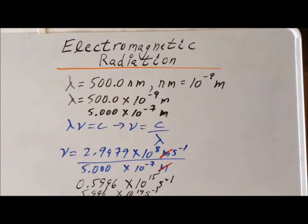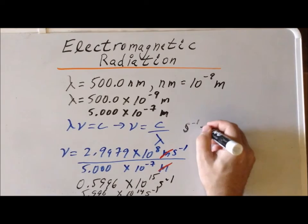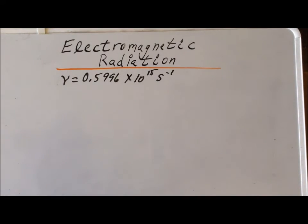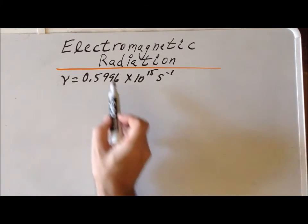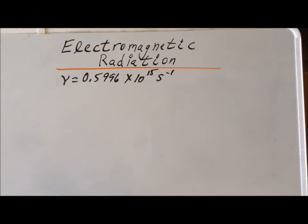Another unit, which is a derived unit meaning the same thing as an inverse second, is the unit of a hertz, abbreviated as Hz. Typically when we are interested just in the energy and not ultimately in the frequency, we can leave the intermediate value in this form. So it's often useful not to convert to standard scientific notation if we're going to continue with further calculations.